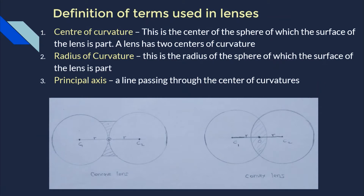We're going to define terms used in lenses. The first term is center of curvature — this is the center of the sphere of which the surface of a lens is part. A lens has two centers of curvature. Our lenses have two curved surfaces; we call them biconcave lenses and biconvex lenses because they have two curved surfaces.